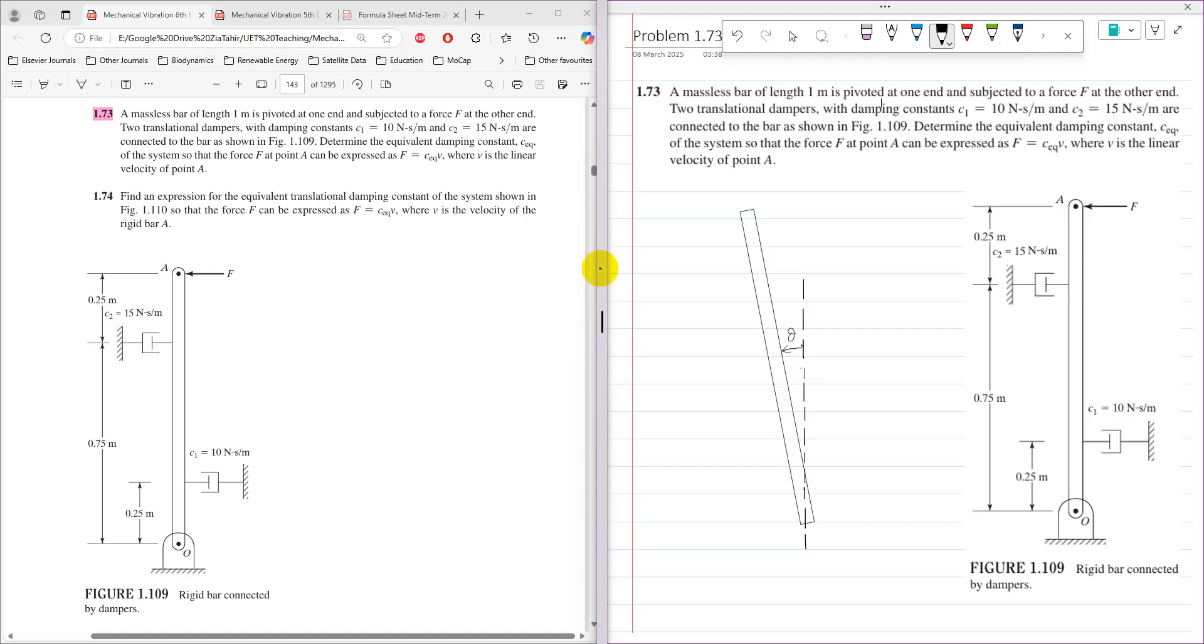When force F is applied, this damper will apply an opposite resistive force F2. When the rod moves in the anti-clockwise direction, this damper will apply another force F1.